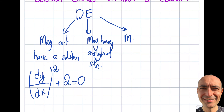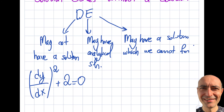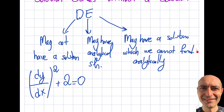The third condition is it may have a solution which we cannot find analytically. So the last two cases: it may have an analytical solution — and most of what we'll focus on in this chapter for the rest of the semester will be in this domain — but I can also have a solution that I'm not able to find analytically.